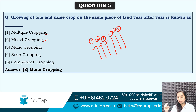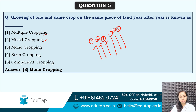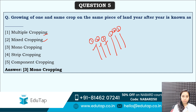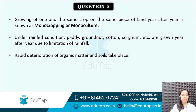A decent score would be above 110. Although we are expecting the cutoff to be a bit higher, if you are getting more than 110, then you should start preparing. Component cropping — please find out and let me know in the comment section. Strip cropping, mixed cropping, multiple cropping are all related. Under rain-fed conditions, paddy, groundnut, cotton and sorghum are grown year after year due to the limitation of rainfall.